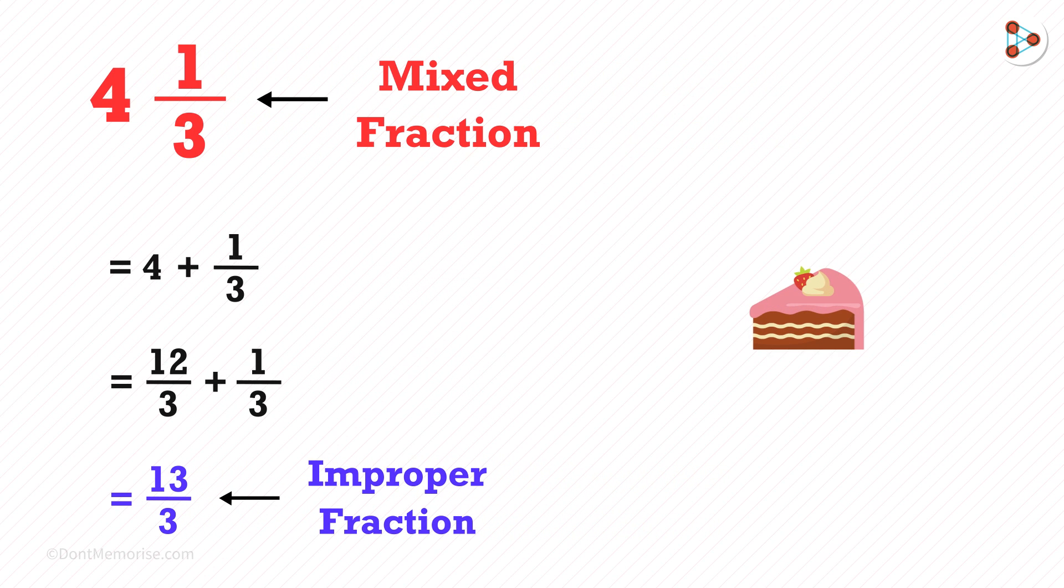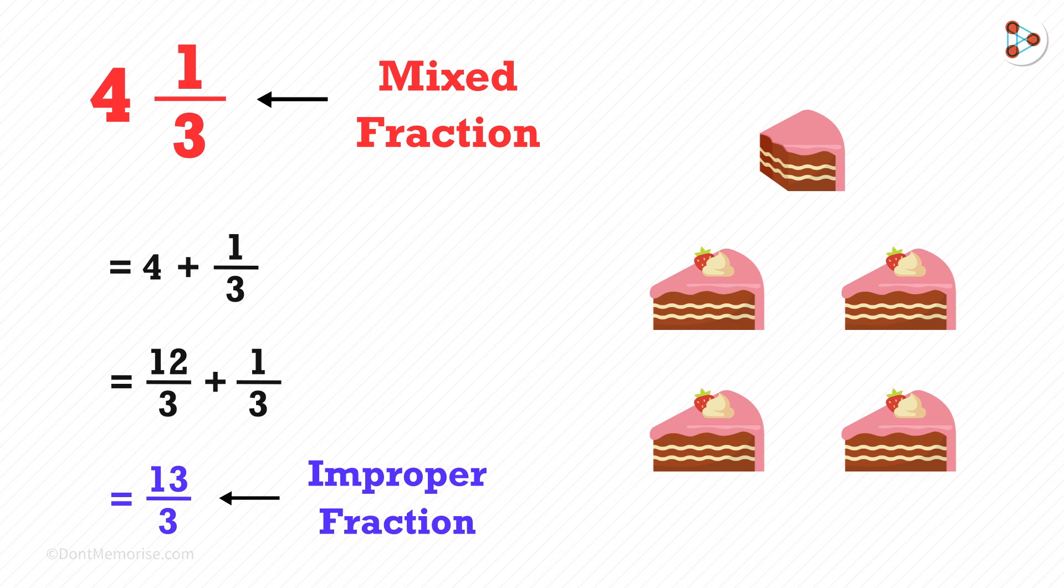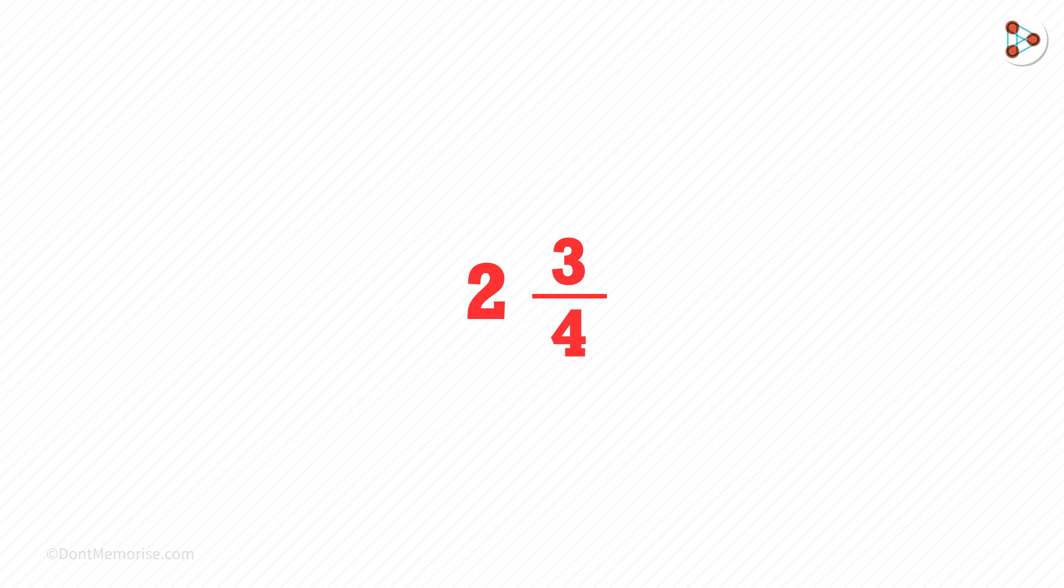if I want to tell how many pastries you ate, I will be able to answer this using mixed fractions. So I will say that you ate 4 1 over 3 pastries. It means you ate a little more than 4 pastries. If I say that you ate 13 over 3 pastries, then it doesn't sound proper. So what you are looking at on the screen is called a mixed fraction.